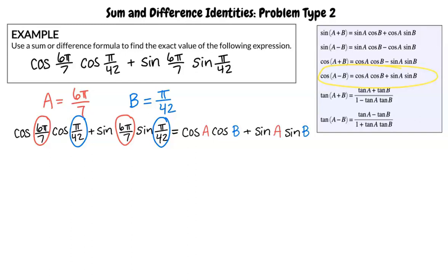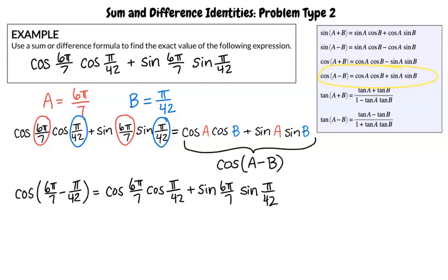We can also see from the list of sum and difference identities that this expression equals cos(A - B). Substituting our A and B into cos(A - B), we write this.